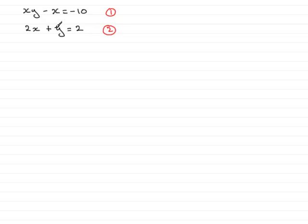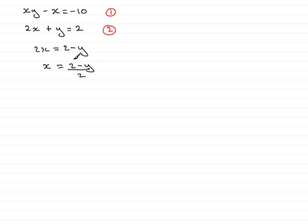It's a much simpler equation, and from it we need to make either x or y the subject. We could make x the subject, but if we did, we'd have 2x equals 2 minus y, then dividing by 2 gives x equals (2 minus y) over 2 — a fraction. Substituting that fraction into equation 1 would lead to a fractional equation. So instead, we'll make y the subject, because that won't give any fractions.